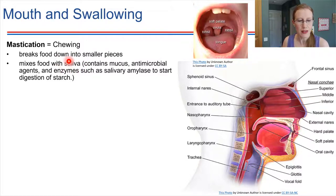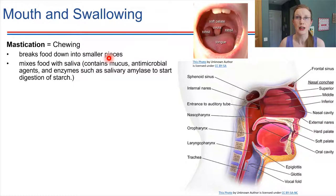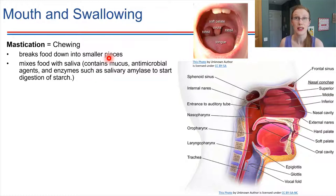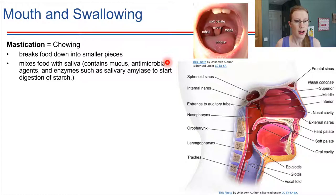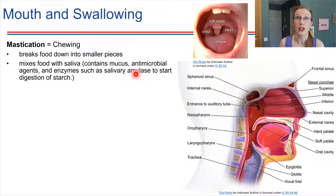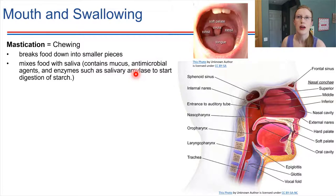What does saliva contain? It contains mucus, which is very important for helping food slide along through the tract. Saliva also has antimicrobial agents — the first line of defense against pathogens that might be in the food you're chewing. There are also enzymes such as salivary amylase, which begins the digestion of starch. Digestion of starch will finish later on in the small intestine, but it gets a start right here in the mouth.